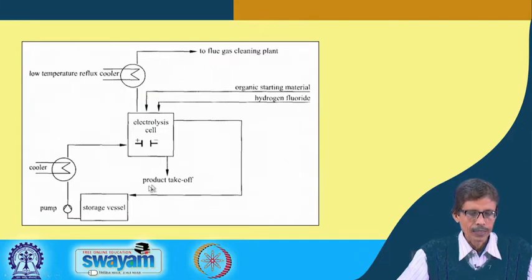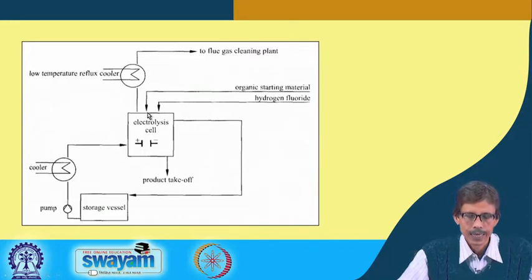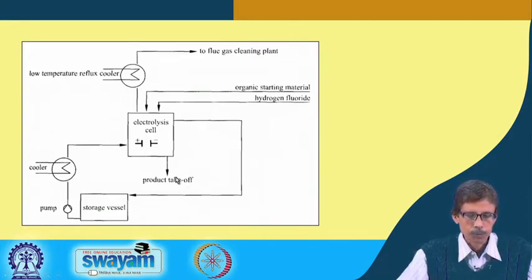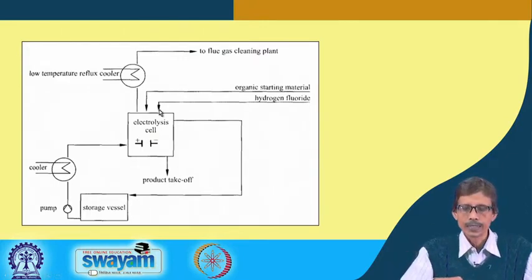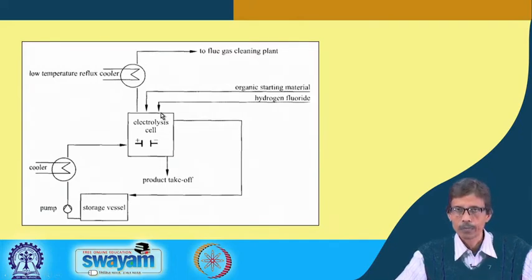Storage vessels are present and the product takeoff is from the bottom of the electrolysis cell. You put the organic starting material S in and get product P out from the bottom. From the top, you add the starting material as well as hydrogen fluoride. The electrolysis cell, chamber, or reactor can have two channels for this purpose.